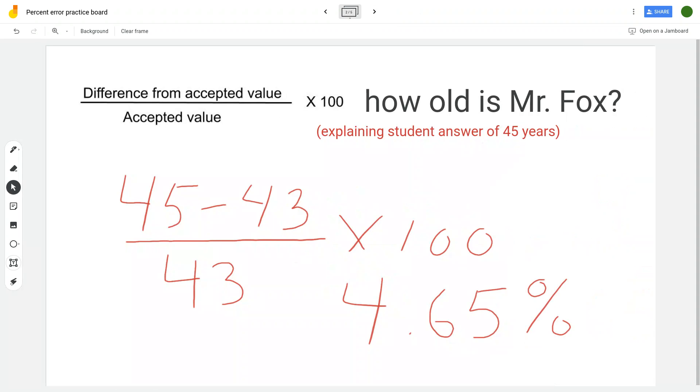The formula is up in the upper left-hand corner and I'm going to go through some of the student responses I got. So one student said 45 years. All right, so we're going to find the difference from the accepted value which I told is 43.